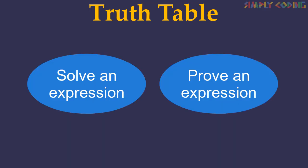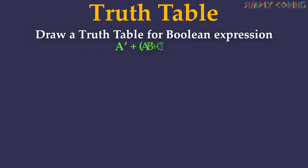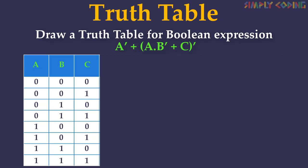We will now see some typical questions asked on truth tables and logic gates. The typical questions are either to draw a truth table for a Boolean expression, or using a truth table, prove that a Boolean expression is true. Let's take an expression ā + (ab̄ + c̄) and see how we can solve it. First, we check if it is a two-term or three-term expression. Since this is a three-term expression, we will set up all combinations of input values using binary numbers from zero to seven.